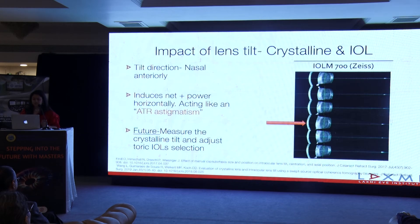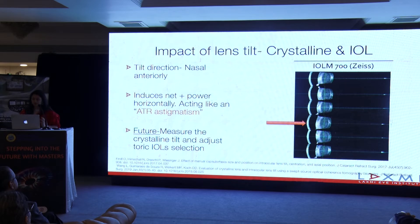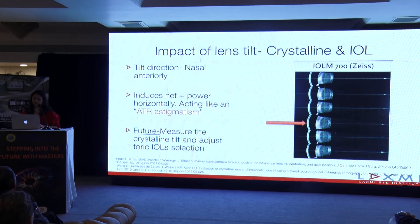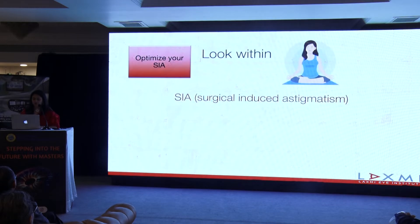An interesting study by Oliver Findl and Grover found that the natural crystalline lens as well as the IOL tilts anteriorly more on the nasal side, and that could act like against-the-rule astigmatism. We definitely need further studies, but a day will soon come when we will adjust this for the toric lens — like PCA before hand — and then decide what toric power to implant. So the calculation of toric lenses is still very much evolving.